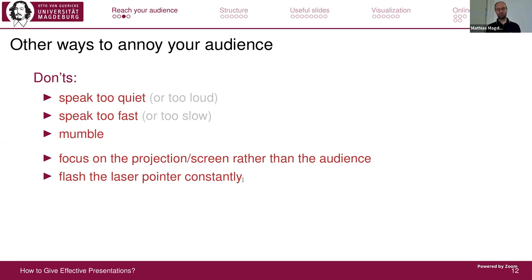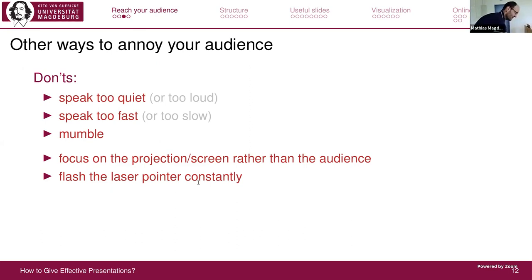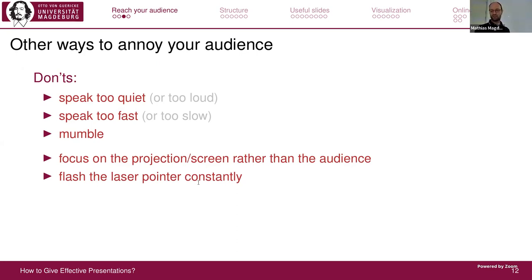Another way to annoy your audience is looking at the projection screen all the time rather than at the audience. You should know what's on your slide well enough that you don't have to stare at it. Use a laser pointer wisely to highlight specific things — don't point it at the audience, don't flash it all the time. If it's used continuously it's no longer highlighting anything.